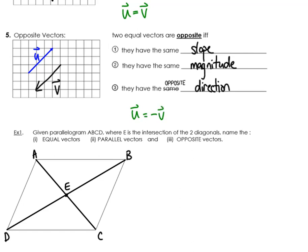Let's practice this now. Example number one. Given parallelogram ABCD where E is the intersection of the two diagonals, name some equal vectors, parallel vectors, and opposite vectors. So I'm going to name a couple just so that you guys get the hang of it but obviously there's a whole bunch more that I'm not going to write down.